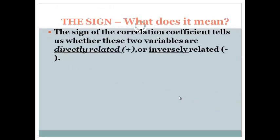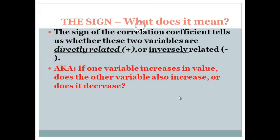But what does the sign mean? Well, the sign of the correlation tells us whether the variables are directly related, they move in the same direction, if one goes up, the other goes up, or inversely, if one goes up, the other one goes down.